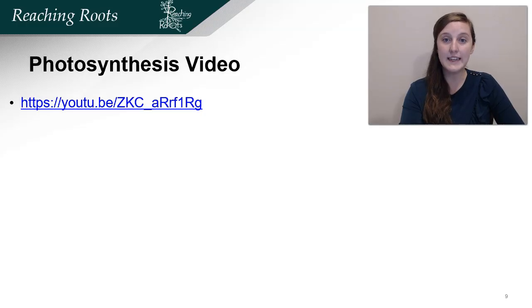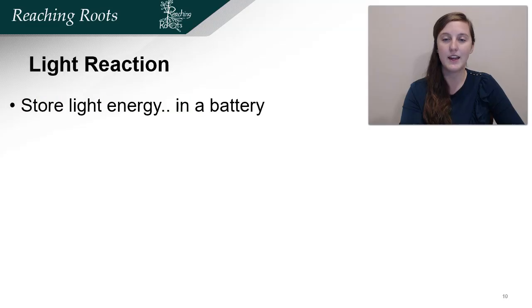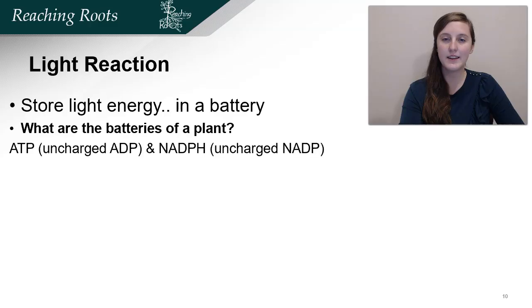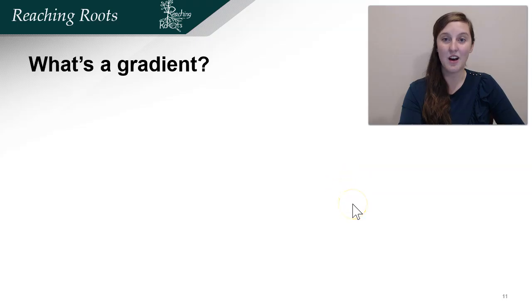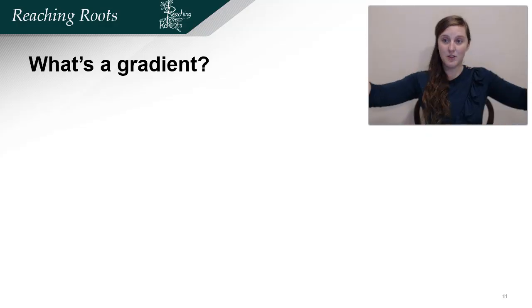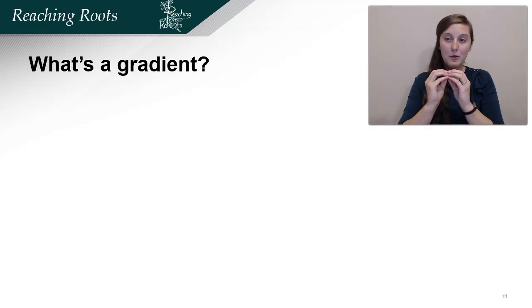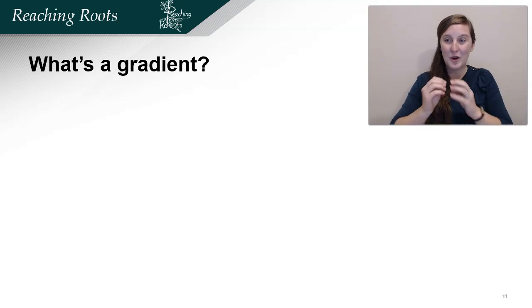First, we want to make sure that we're all on the same page. The general idea is plants store light energy into a battery. What are the batteries of a plant? ATP — the uncharged version is ADP — and NADPH. The uncharged version is NADP+. How do they do this? Using the processes we're going to cover, one of which is using a gradient. What's a gradient? Have you ever sprayed perfume and then it diffuses in the room? It starts out smelling very strongly, but after a few minutes the perfume molecules diffuse — they basically don't want to be concentrated together.